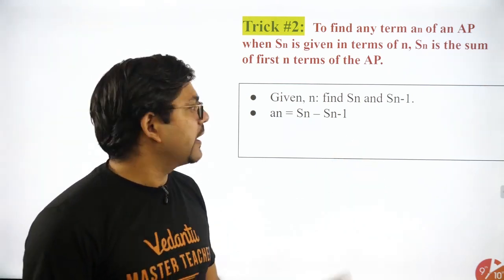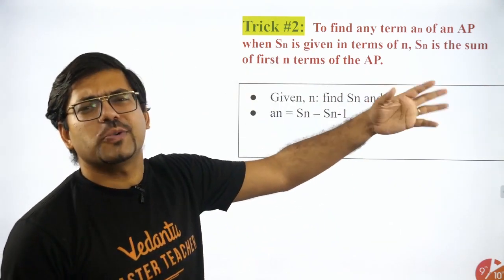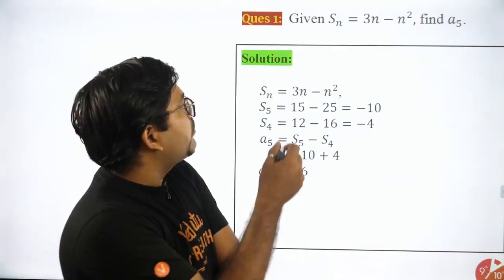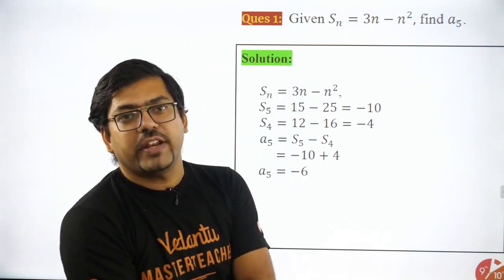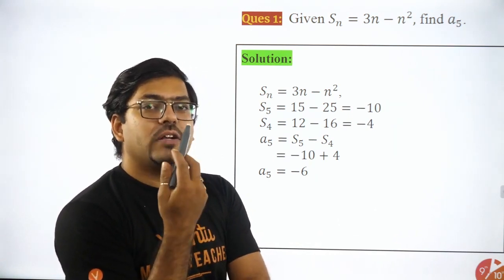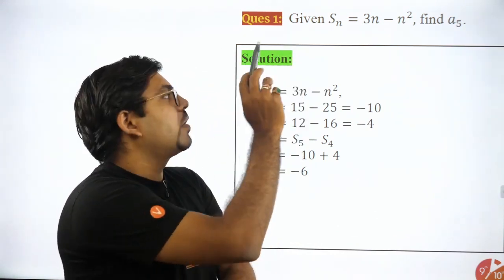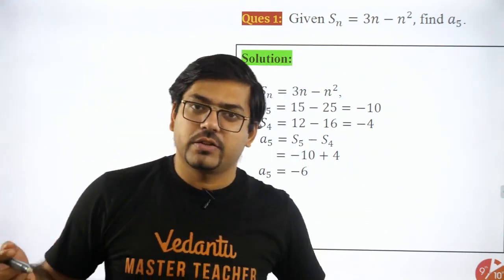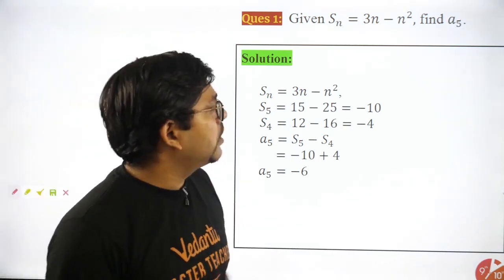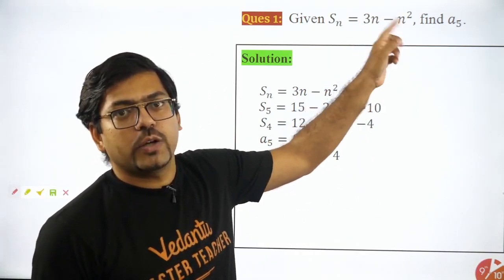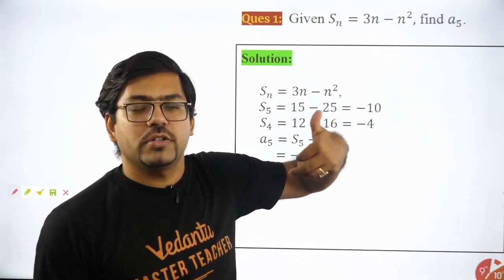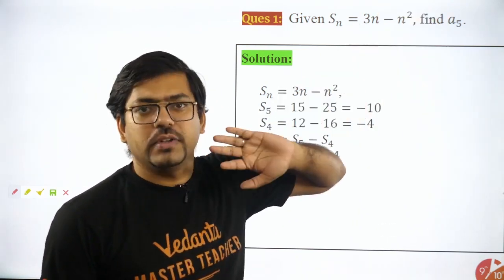So this is the second trick. In the second trick again some theory is written — let's not get into that, let's directly jump to the example. This theory says that, for example, S_N is given and you have to find the fifth term of the AP. Sum of N terms of an AP is given by some formula and you have to find the seventh term, ninth term, 50th term, whatever. In these type of cases there are two methods. First method: either you put N=1, then N=2, then N=3, get the first, second, third term of the AP, then get the first term and common difference, then find the fifth term.